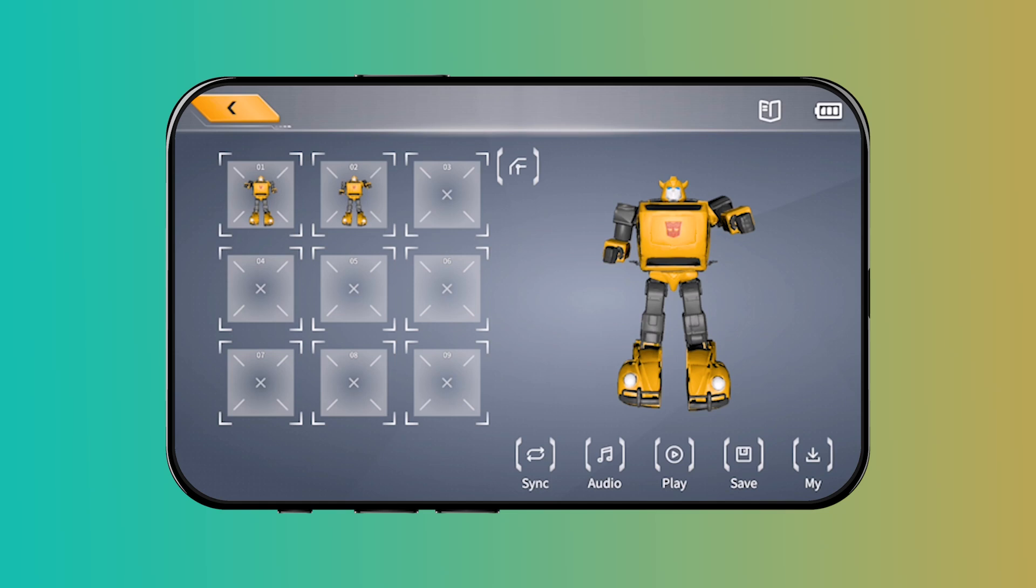If the actions that have been done before need to be done again, use the copy function. Just like this, click one action that has been done, then click a blank grid to copy the action.